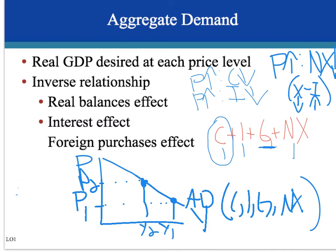The reverse is true too. If price level goes down, quantity of consumption of output increases, quantity of investment increases, and net exports also increase. A change in the price level causes a movement along the aggregate demand curve — it helps form the downward-sloping curve, but it does not cause a shift. A change in the price level will not shift the aggregate demand curve; it will only cause a movement.